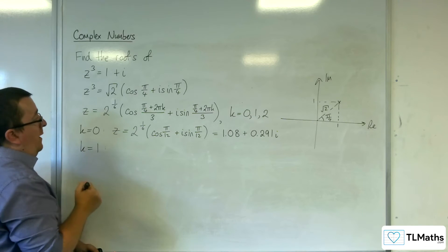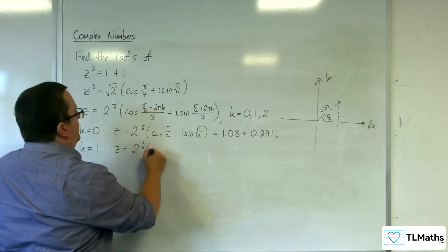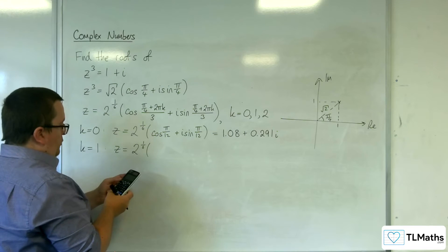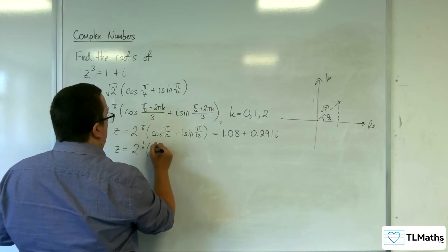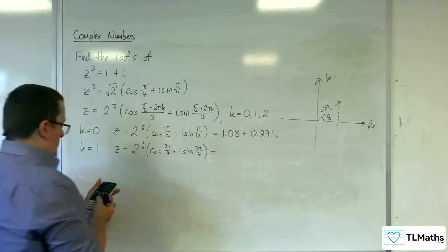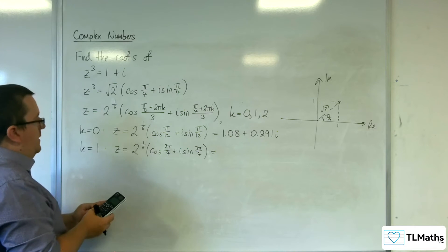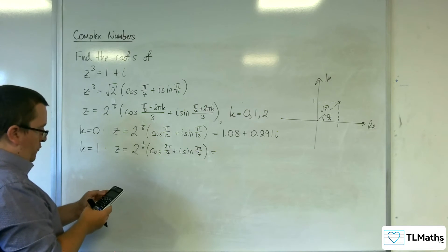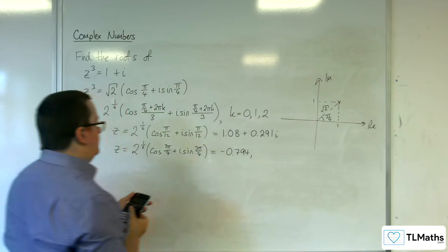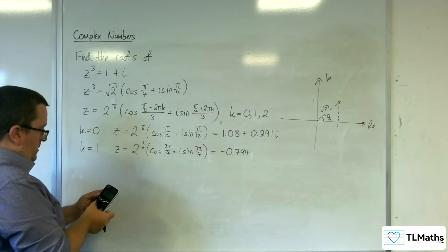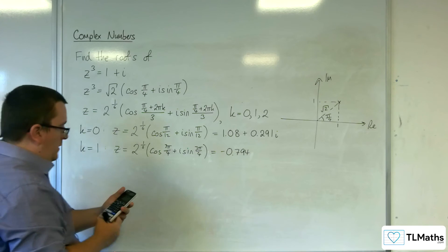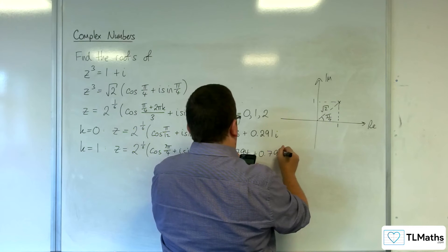Then we've got k is equal to 1. So we have 2 to the power of 1 sixth. Then we've got pi over 4 plus 2 pi, and then we divide that by 3, so 3 pi over 4. So 2 to the power of 1 sixth times cosine of 3 pi over 4, and that's minus 0.794. And 2 to the power of 1 sixth times sine of 3 pi over 4, so plus 0.794i.